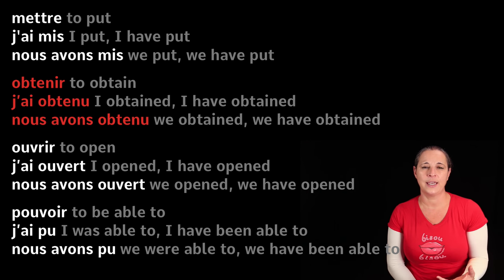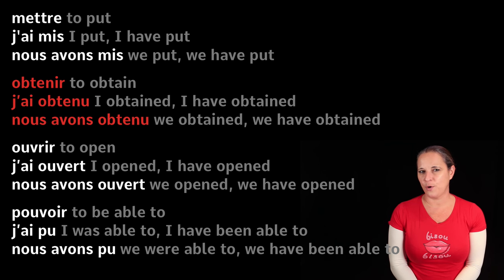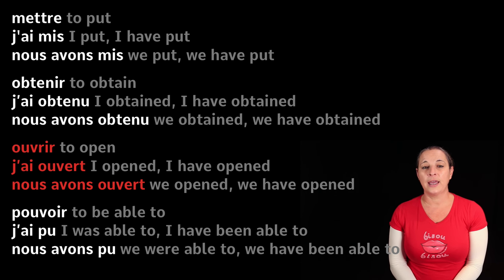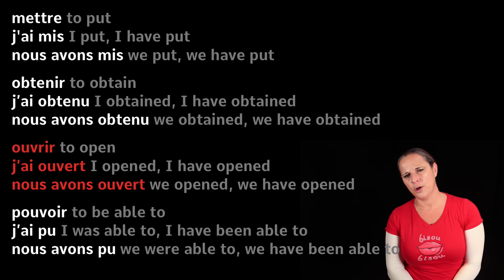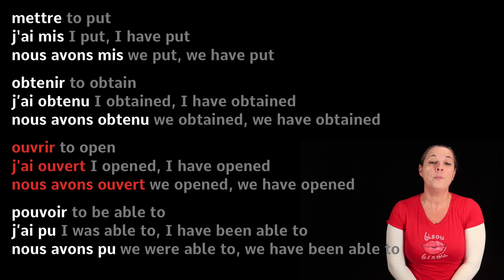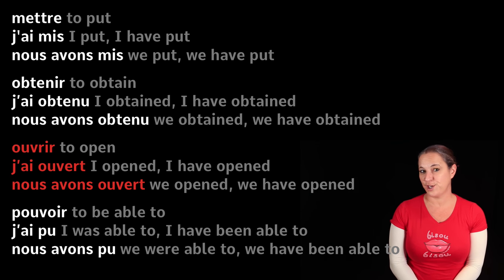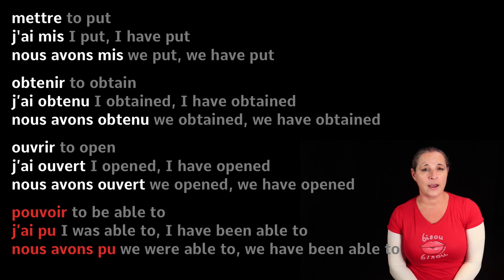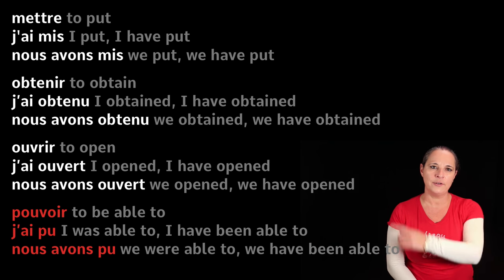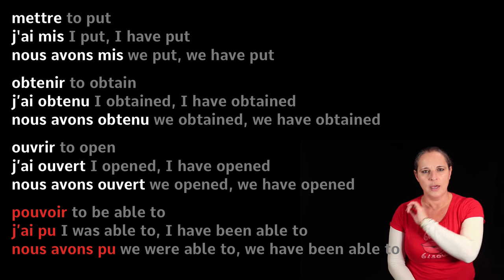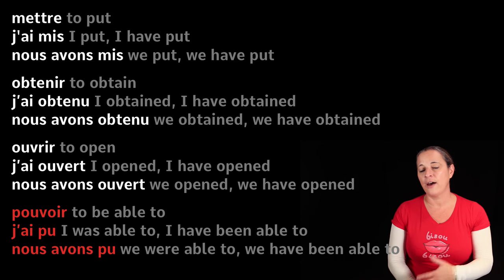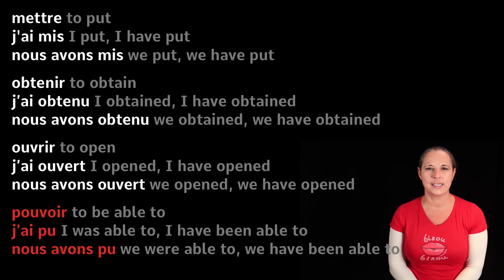Obtenir means 'to get' or 'to obtain' — j'ai obtenu, nous avons obtenu: I have obtained. Ouvrir means 'to open' — j'ai ouvert, nous avons ouvert. Pouvoir means 'to be able to,' and its past participle is pu. J'ai pu — I have been able to. Nous avons pu. It's a very hard verb to translate.